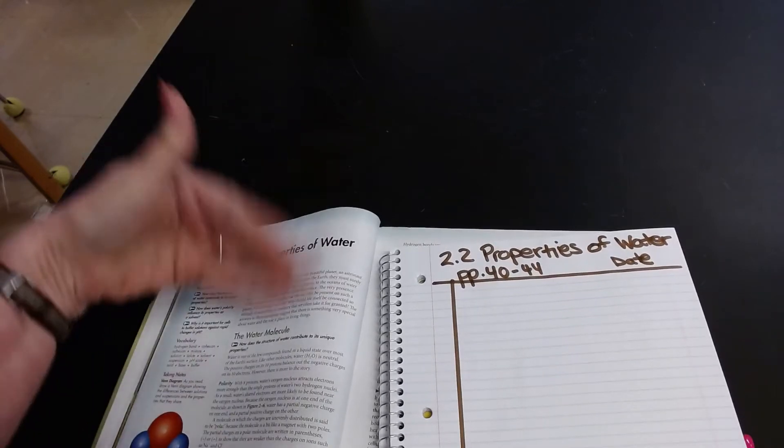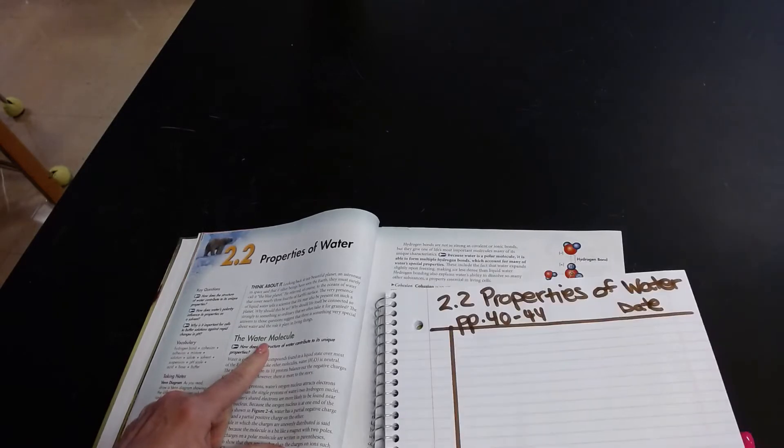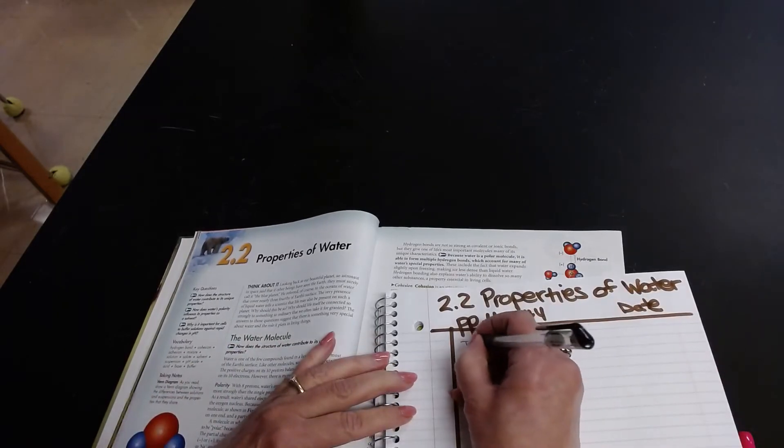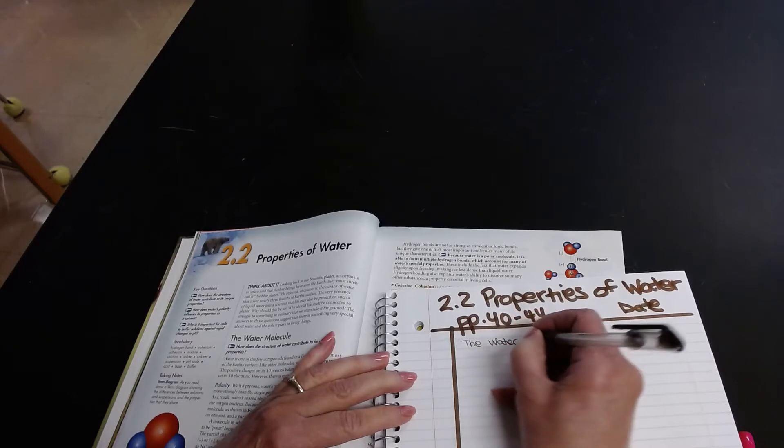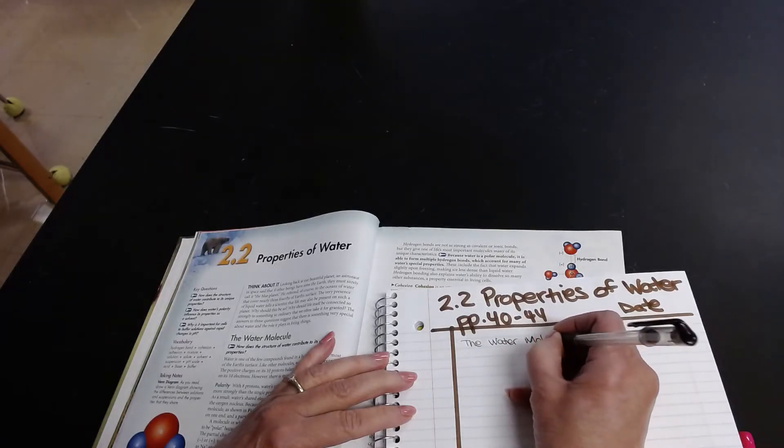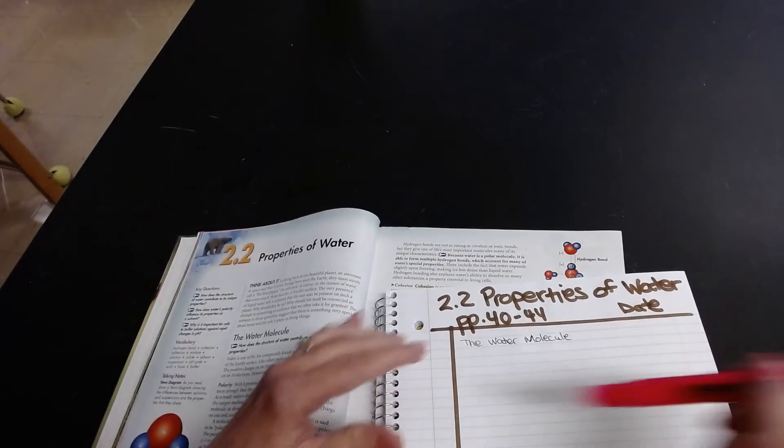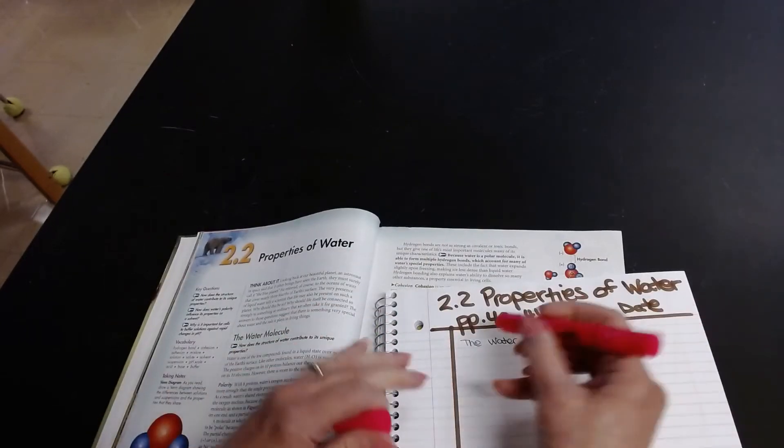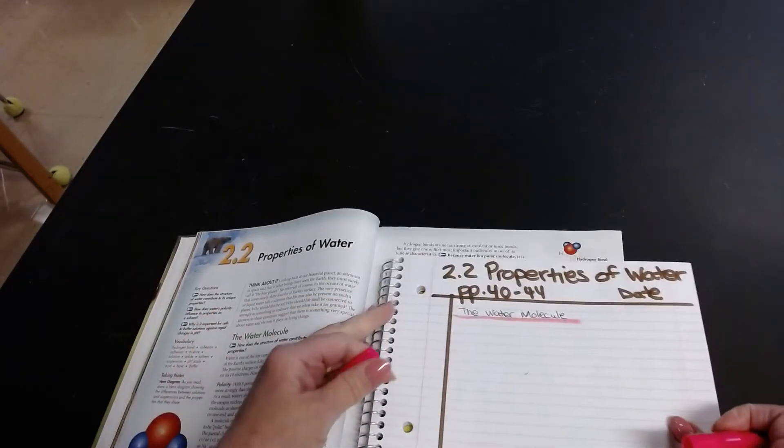Now this is an introduction. So I've already read that. Now I'm going to start the next section. The first section is called the water molecule. So I'm going to write just that. The water molecule. And this is a major section. So I'm going to take my gel pen. And I'm going to underline it. As you can see here, the water molecule.